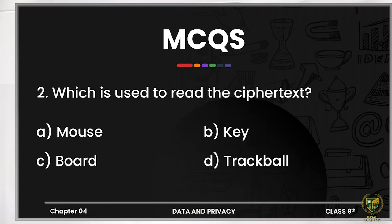The next MCQ on your screen says: 'Which is used to read the ciphertext?' When we were looking at the simple encryption process, we saw that we transfer plain text and encrypt it into ciphertext. The ciphertext is in an unreadable format. Now what do we use to read the ciphertext that has been formed? Options are: mouse, key, boat, or trackball. The correct option is option number two — key. The key, which we also called a secret code, works like a password. Key is used to read the ciphertext — to read the text we have encrypted, the key is used.